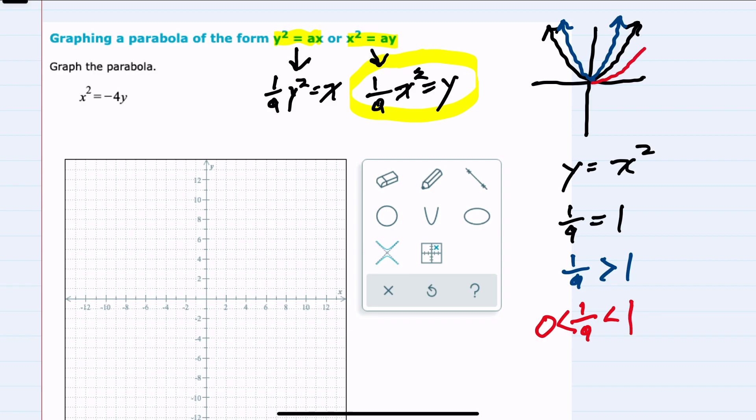And then if 1 over a is negative, less than 0, we would have this same pattern but upside down. So these are the basic graphs for this form where y is the lone variable.